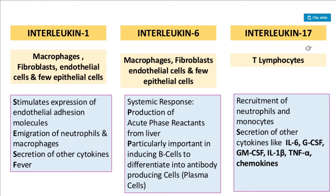Interleukin-1 is produced by macrophages, fibroblasts, endothelial cells, and a few epithelial cells. Its functions include stimulating the expression of endothelial adhesion molecules, promoting immigration of neutrophils and macrophages, stimulating secretion of other cytokines, and increasing body temperature — that is, causing fever.